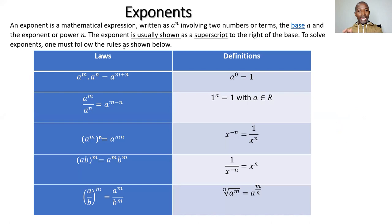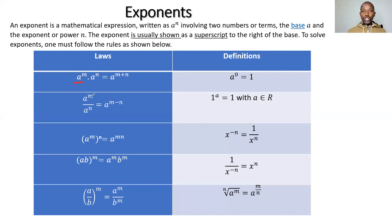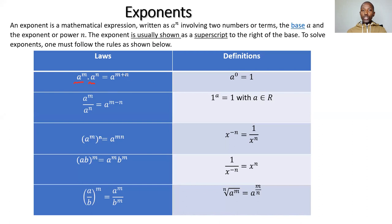The way maths deals with exponents is very different from normal addition, subtraction, and division. We have rules to go through one by one, then we'll do many questions to apply them. The first law: if you have 'a to the power m' multiplied by 'a to the power n', the bases are the same, so this equals 'a to the power m plus n'. When exponents of the same base multiply, their powers add.